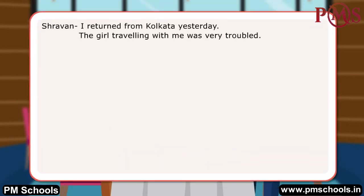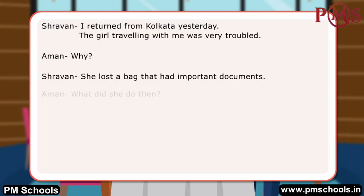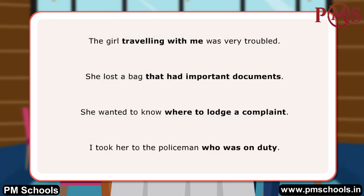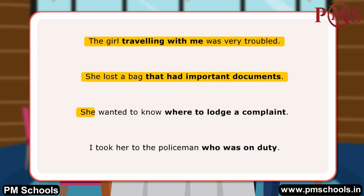In the dialogues, Shravan and Aman have used relative clauses with who, where, that, etc., and also ING clauses to express themselves. Here are examples of relative clauses: 'The girl travelling with me was very troubled.' 'She lost a bag that had important documents.' 'She wanted to know where to lodge a complaint.' 'I took her to the policeman who was on duty.'